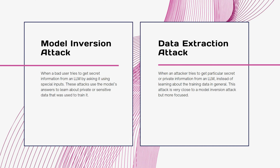Narrowing down the types of attacks, we can talk about model inversion attacks and data extraction attacks. A model inversion attack aims to reverse engineer a target LLM to uncover sensitive information about its training data. Specifically, these attacks exploit the LLM's internal representations and decision boundaries to reveal sensitive attributes of the training data. For example, an attacker could input images of individuals into an LLM capable of face recognition and recover personal information such as their name, address, or social security number.